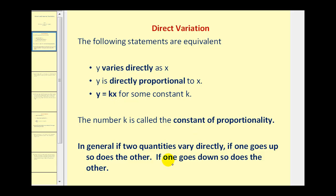In general, if two quantities vary directly, if one quantity goes up, so does the other, and if one quantity goes down, the other also goes down. Let's take a look at an example.